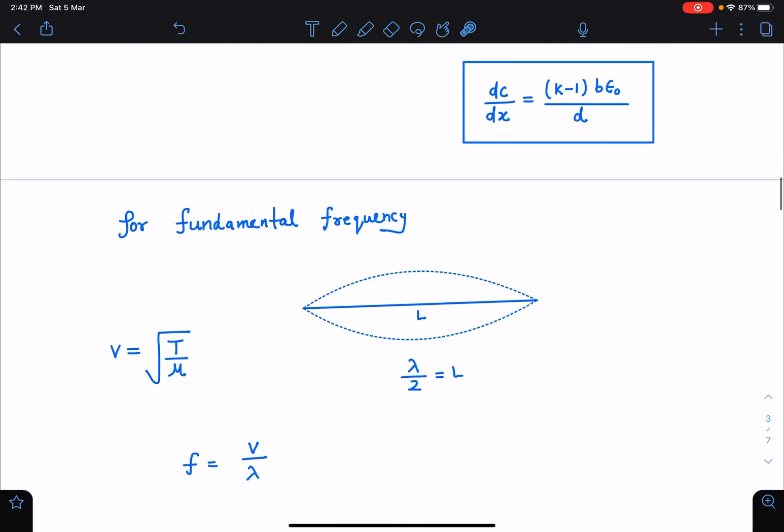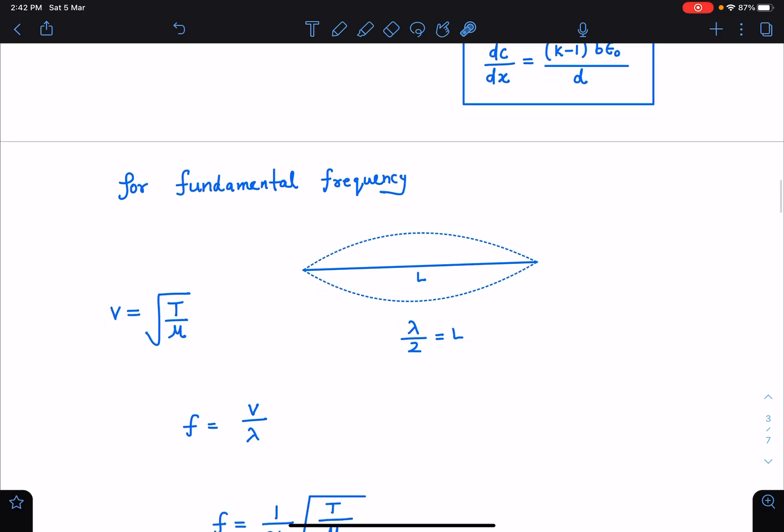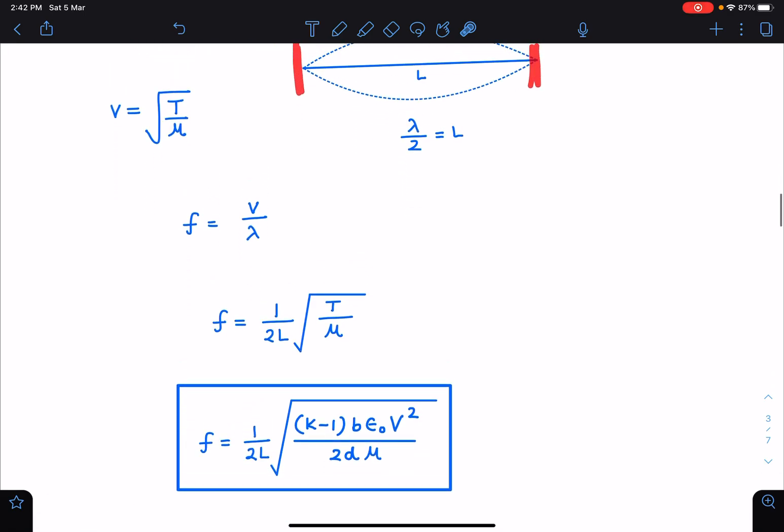Now here you can say for fundamental frequency, this distance between the two nodes which is l, it will become lambda by 2. So lambda by 2 must be equal to l. Velocity of wave here will be root T by mu and frequency will be v by lambda. This is for a fundamental tone.